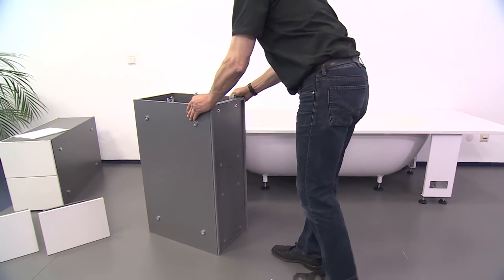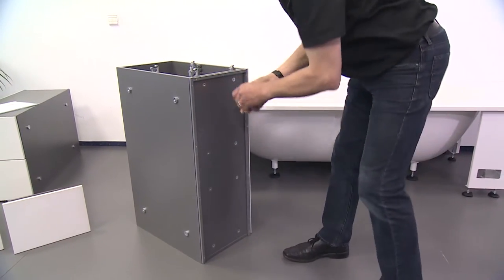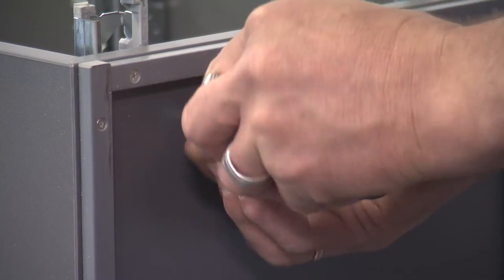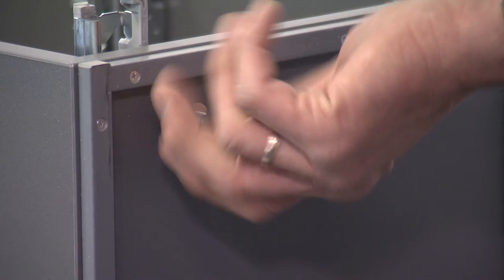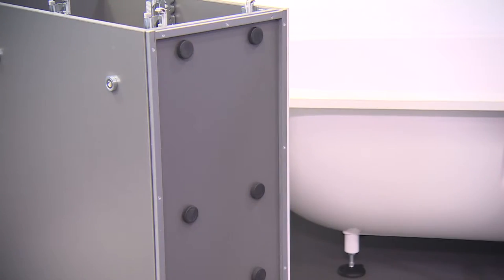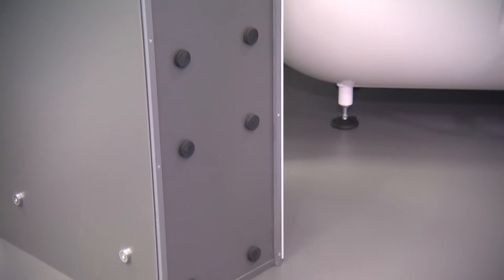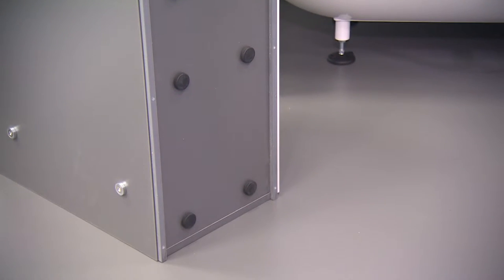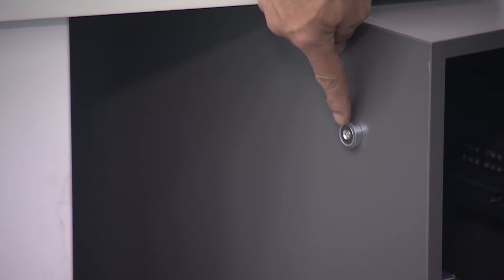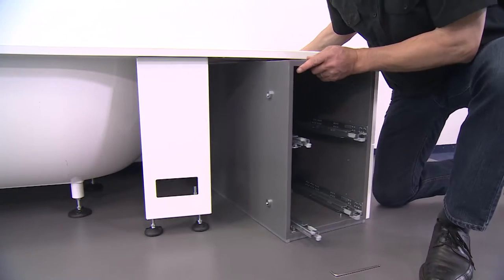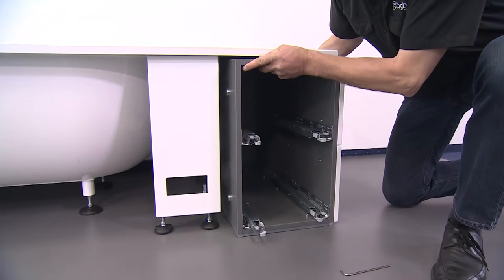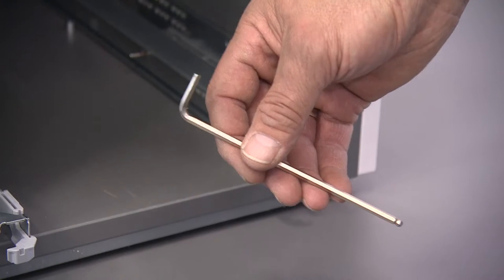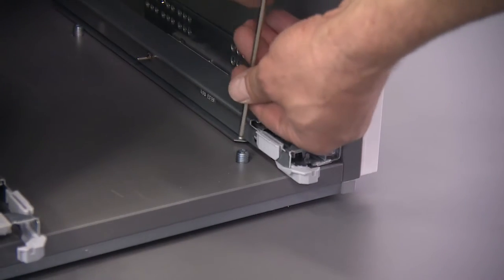You can now screw the adjusting screws into the cabinet base. The cabinets connect automatically to the frame with the help of magnets. Move the furniture into position under the bath and adjust its position.